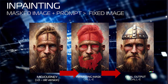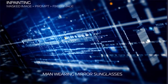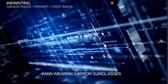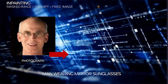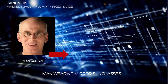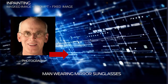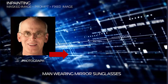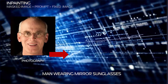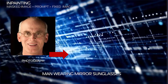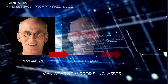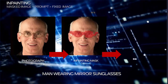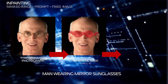Similarly, we can take existing photographs and add objects not present in the original image. Here's a photo of Russell Brown, and he really needs to wear mirror shades. I take the photo into DALL-E, mask out the area, and generate the mirror shades.